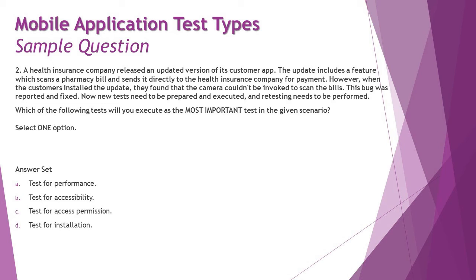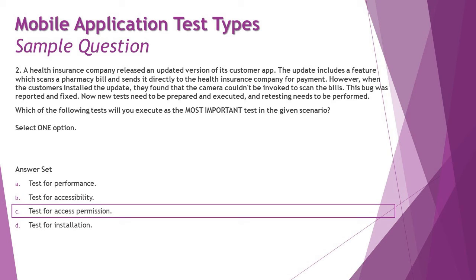When it comes to installation, users were able to install the update but encountered the defect differently. The most important test to perform is C — test for access permissions — because the missing or incorrect access permission was the likely root cause of the fixed problem. The right answer is C: test for access permissions to ensure the camera is now accessible after the issue has been resolved, and create additional test cases for other accesses the app may require.